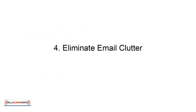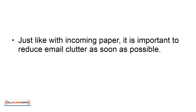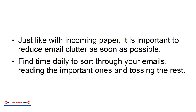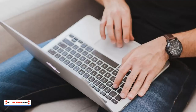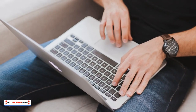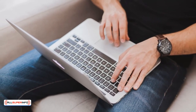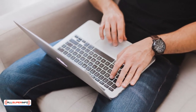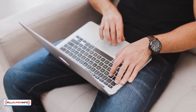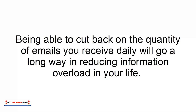Number four: eliminate email clutter. Just like with incoming paper, it is important to reduce email clutter as soon as possible. Find time daily to sort through your emails, reading the important ones and tossing the rest. Create an electronic filing system to store important emails that you may need to look at later. Evaluate the emails you receive and decide which lists you can safely unsubscribe from. Being able to cut back on the quantity of emails you receive daily will go a long way in reducing information overload in your life.